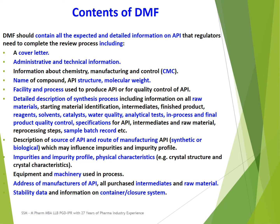Contents also include information on the facility and process used to produce API or for quality control; detailed description of the synthesis process including information on all raw materials used, starting material identification, intermediates, finished product, information on reagents, solvents, and catalysts used in the process; information on quality control of water; information on analytical tests used; information on in-process and final product quality control; information on specifications for API, intermediates, and raw materials; and information on reprocessing steps and sample batch records.